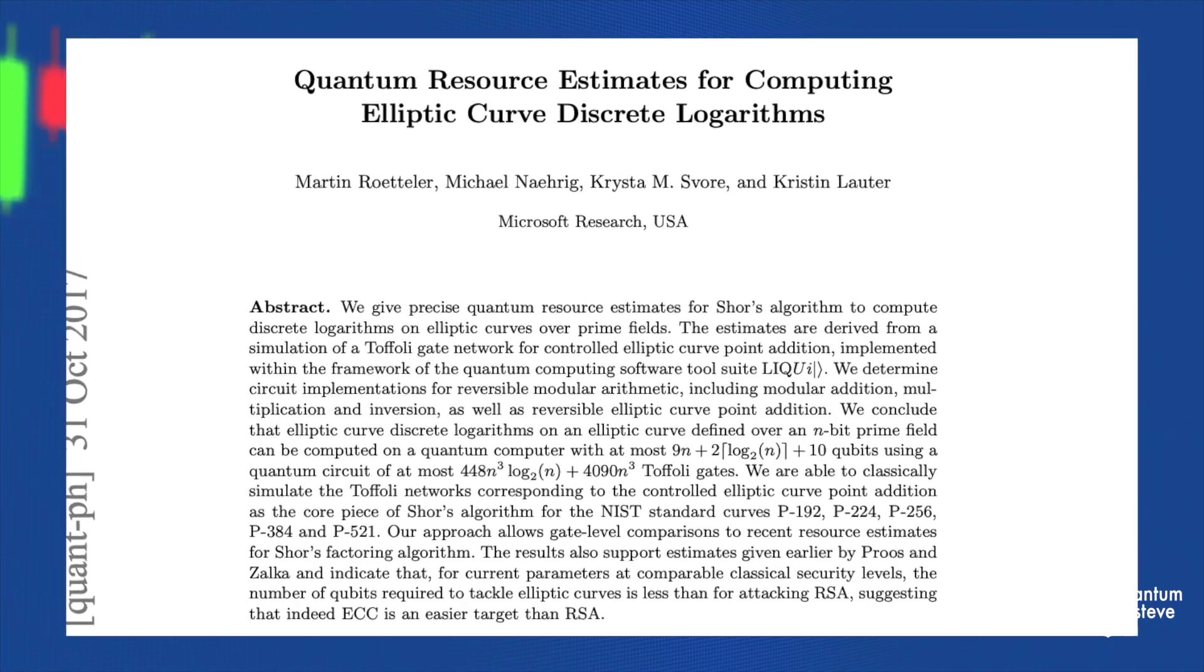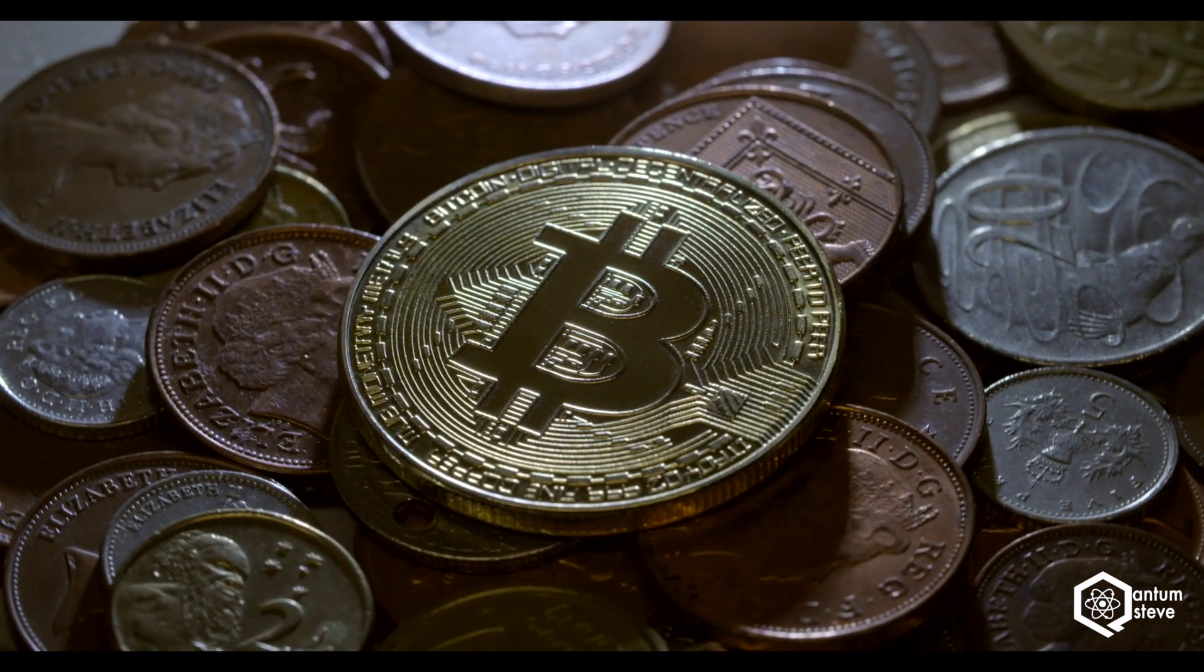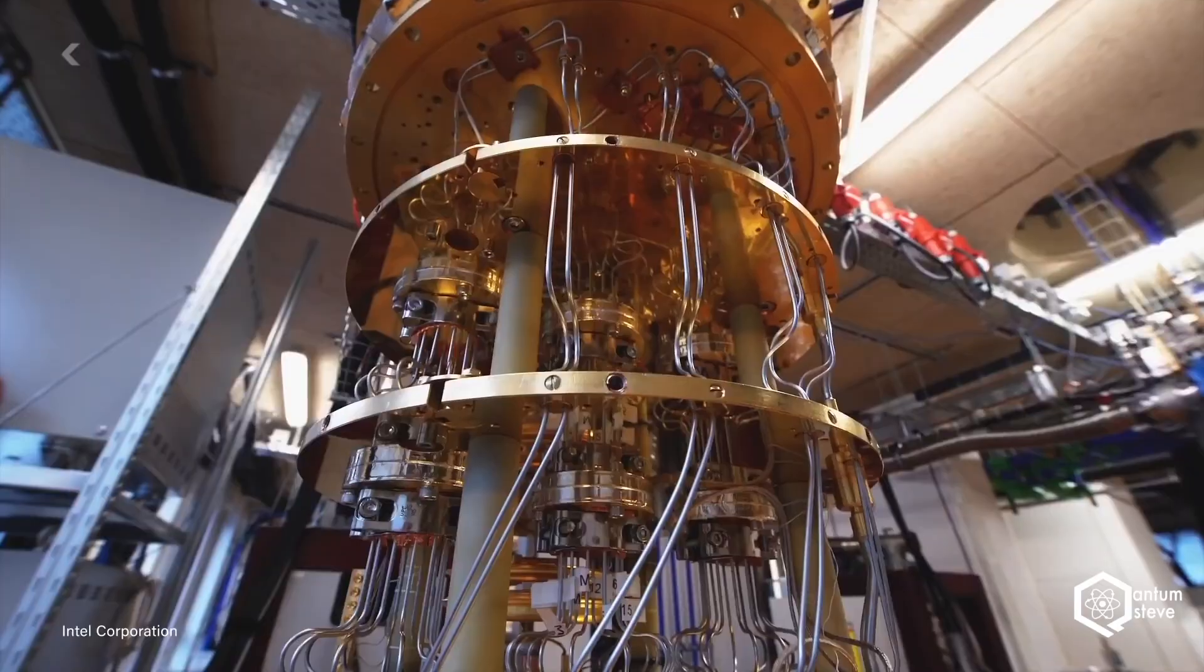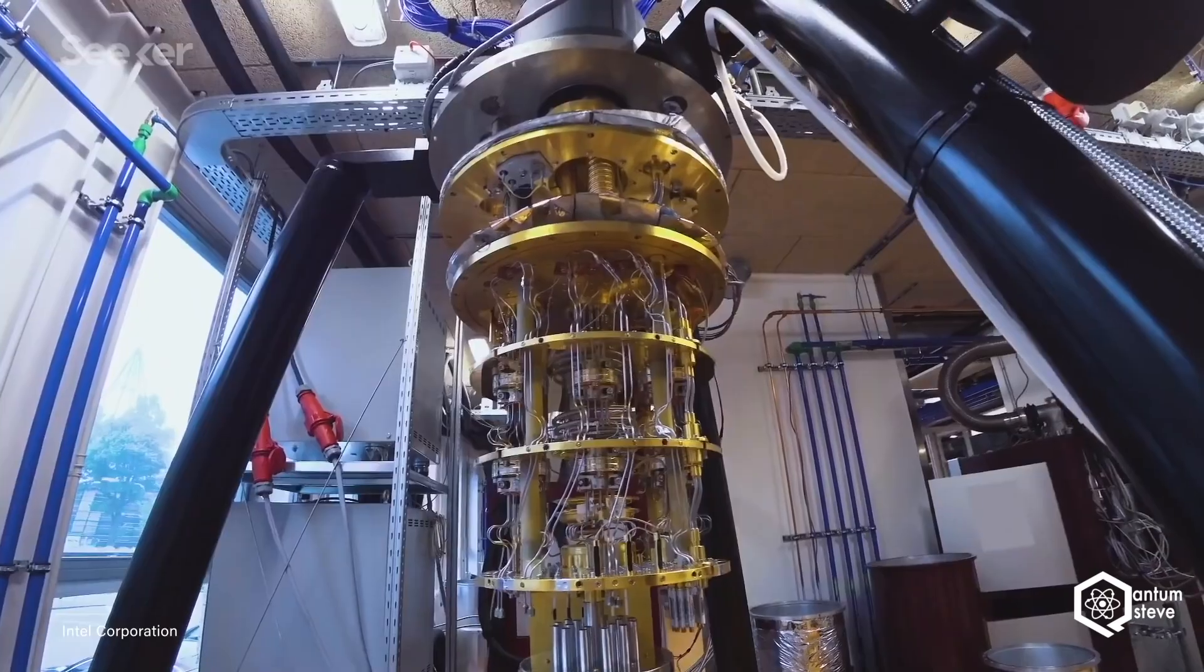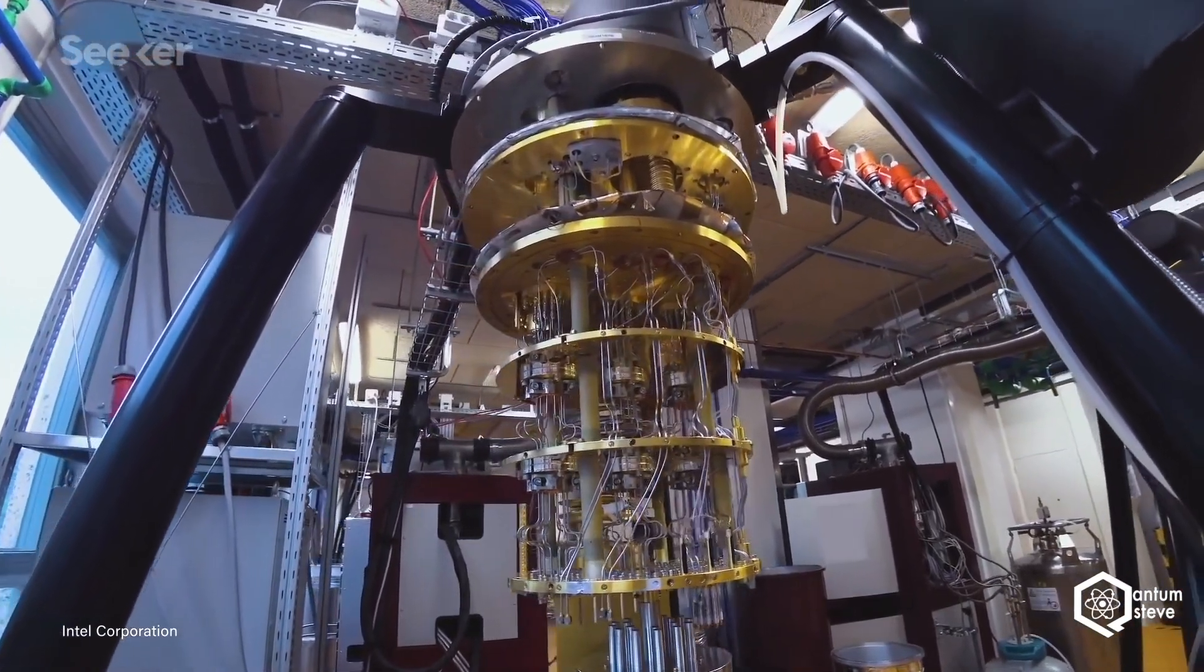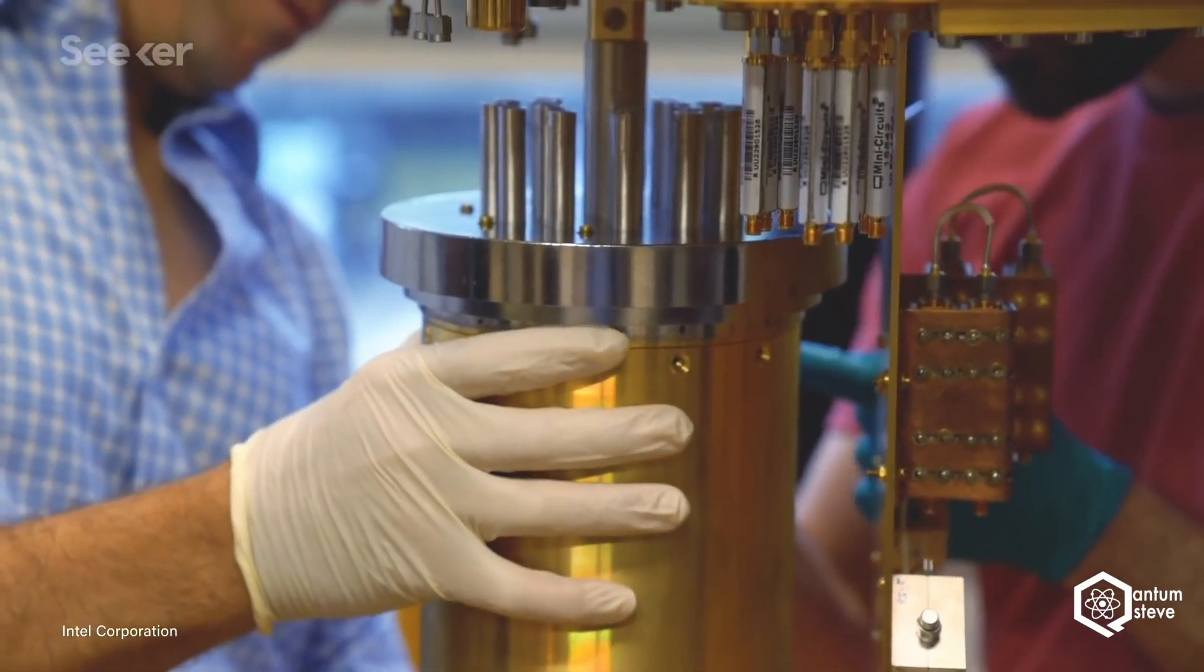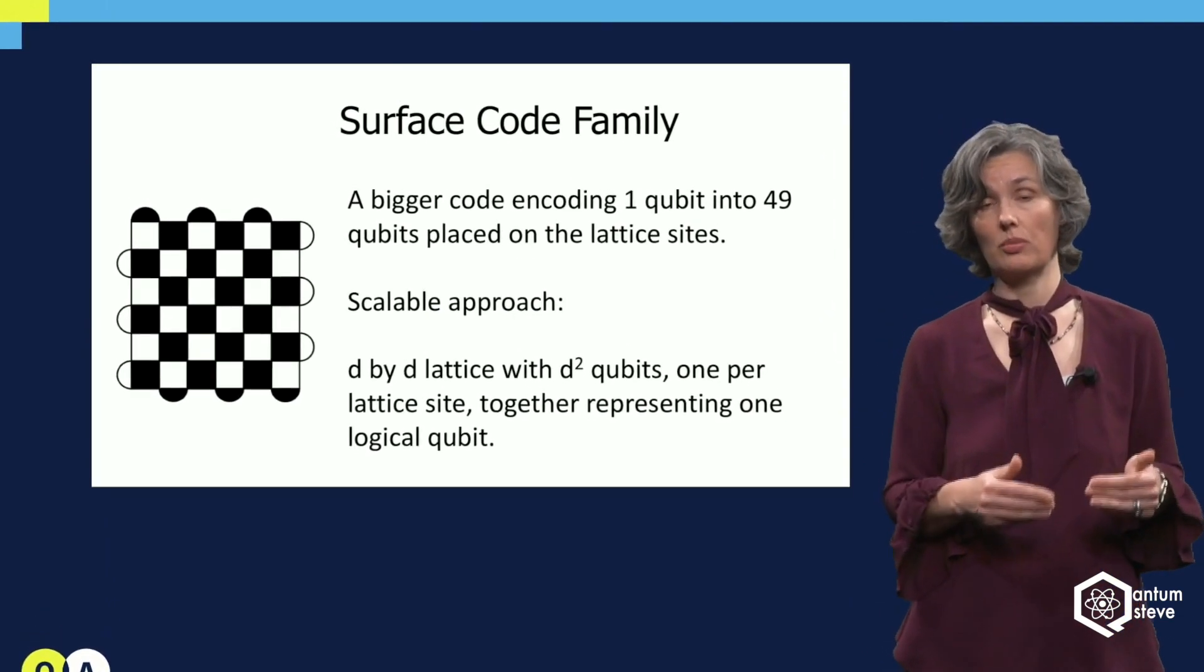The researchers estimate that for breaking the elliptic curve cryptography that Bitcoin is using we need around 2334 logical qubits. Logical qubits are perfect qubits without any errors, not the noisy error prone ones that we have today. So we are going to need an error correction code that corrects the errors. The most popular error correction code today is the surface code which uses multiple physical qubits to encode one logical qubit.